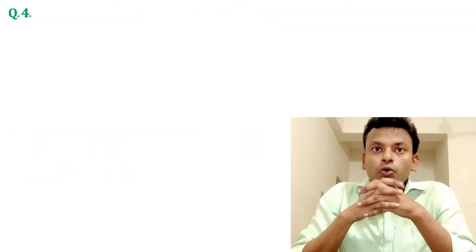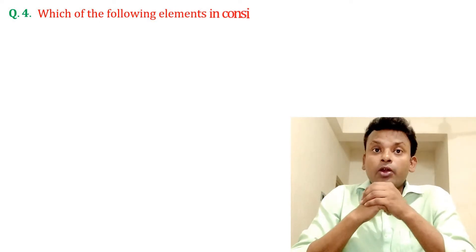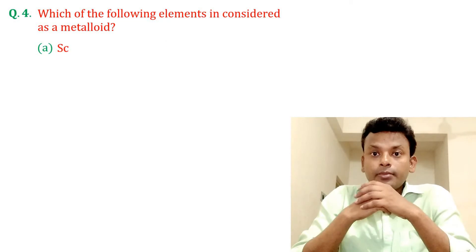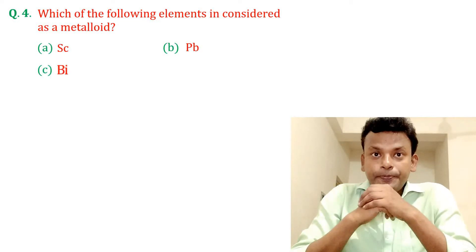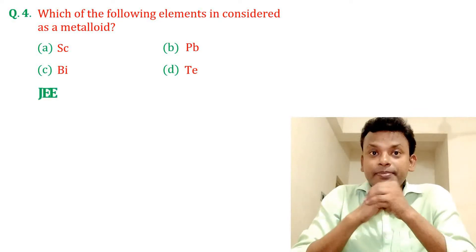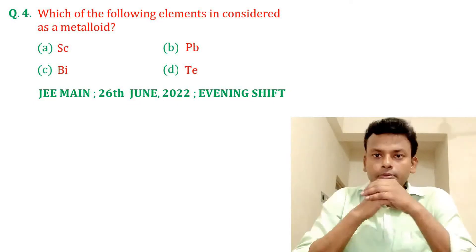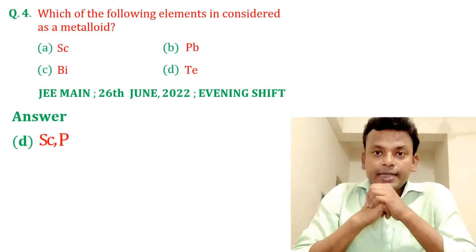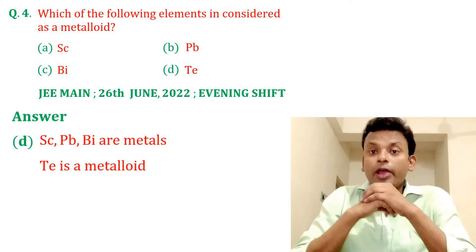Question 4: Which of the following elements is considered as a metalloid? Option A, option B, option C, and option D. This question was set in JEE Main 26th June 2022 evening shift. Answer: option D is the correct answer. Sc, Ti, V, and I are metals, and Te is a metalloid.